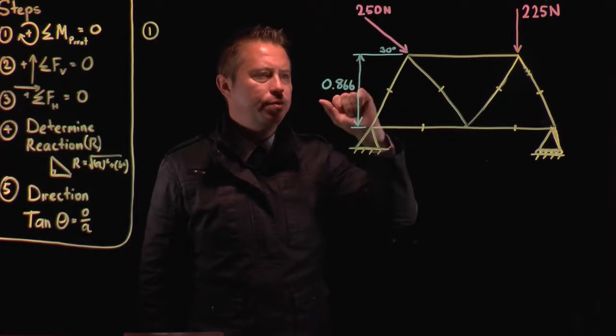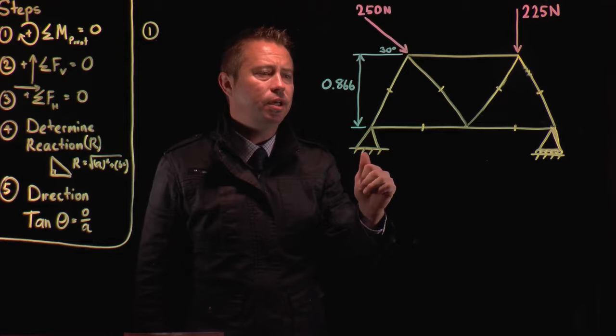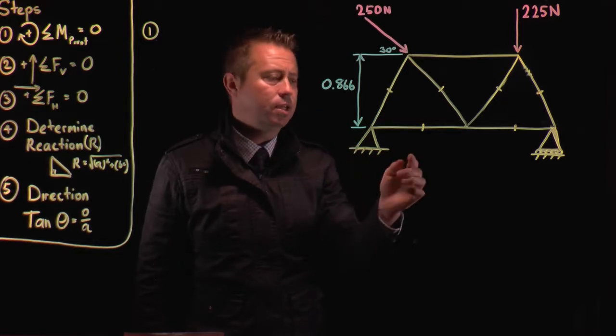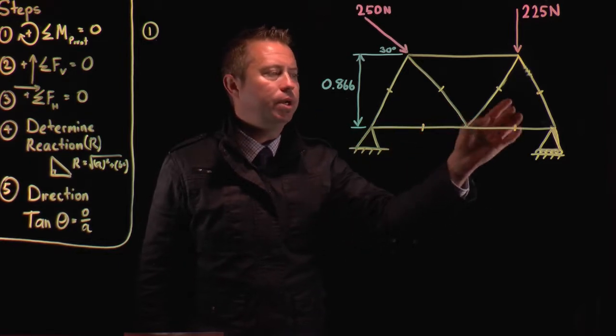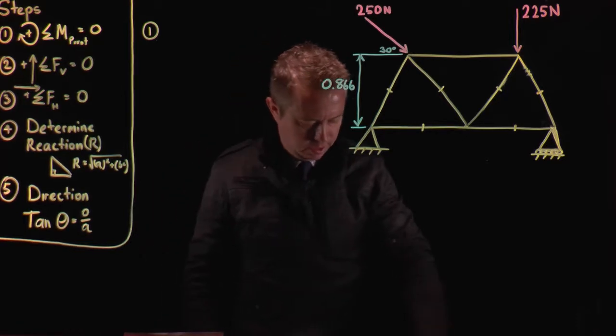We know that the perpendicular distance from the top of the truss is 0.866, and the distance here is 1 metre, equilateral triangles.